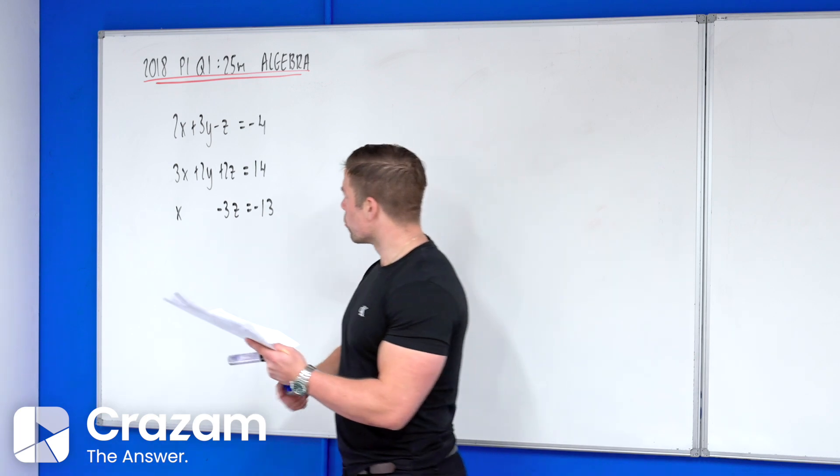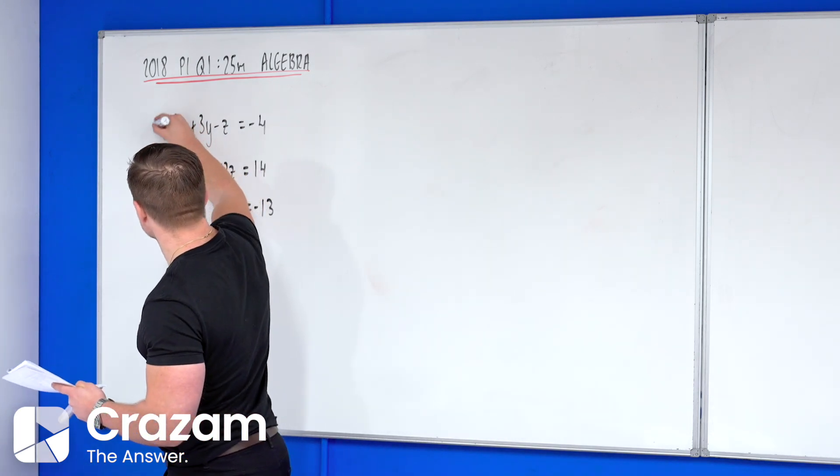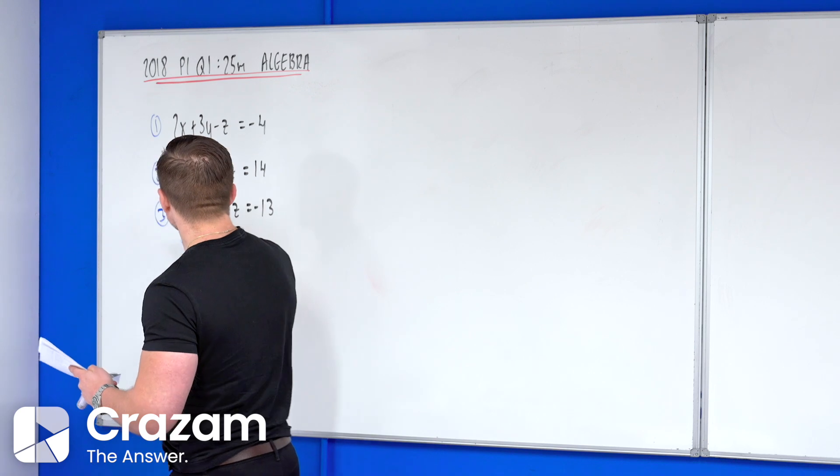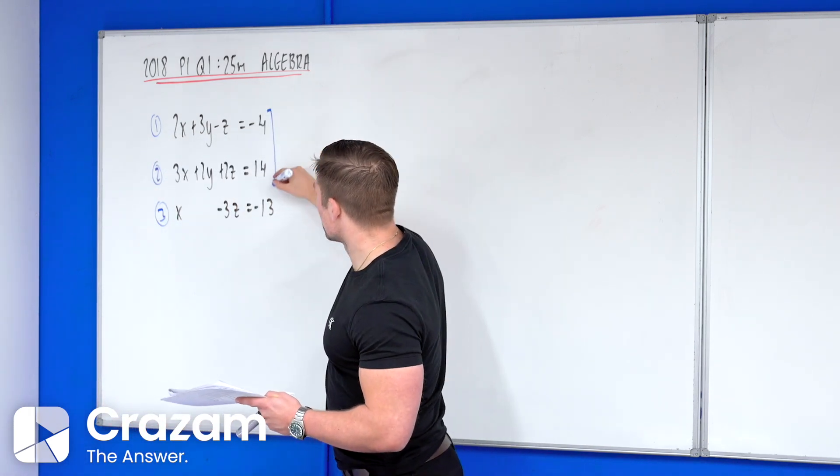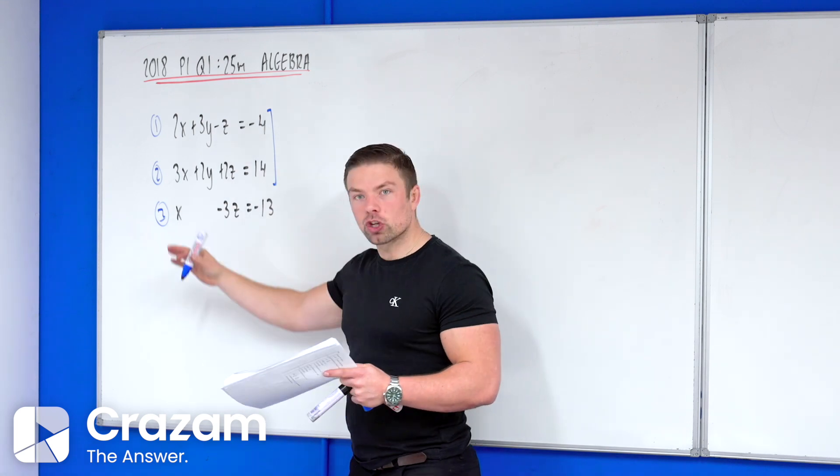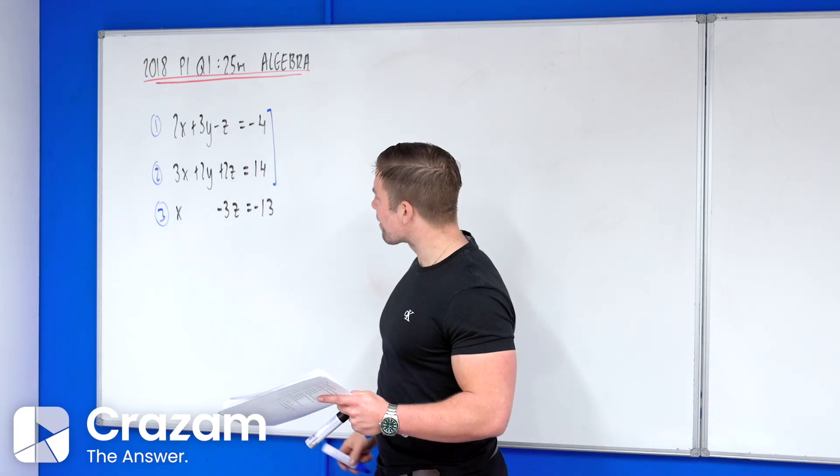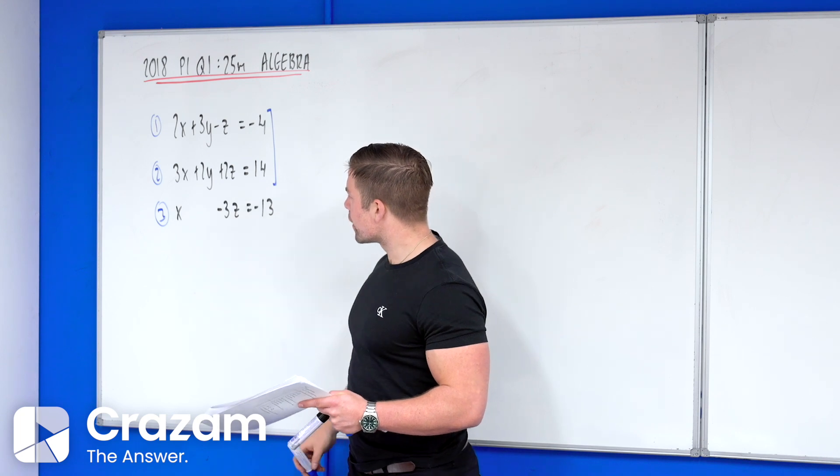What we are going to do is we're going to label these equations one, two, and three as you can see. This is an equation with only two unknowns, so we're going to deal with the equations one and two that have three unknowns and we're going to get rid of the letter that is not in equation three.